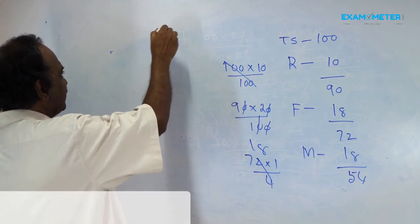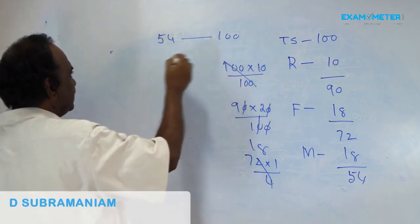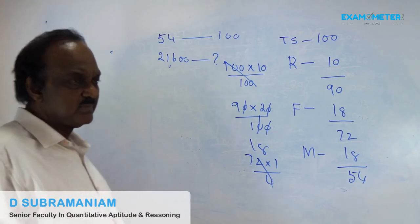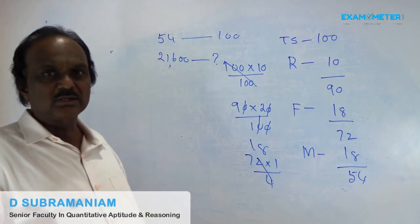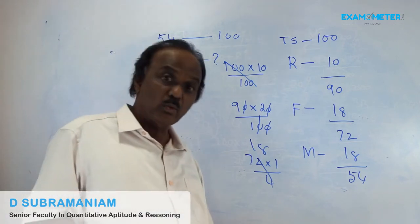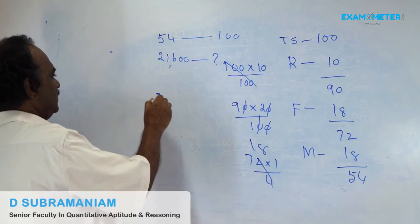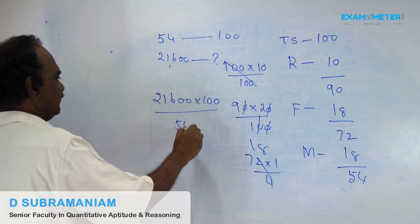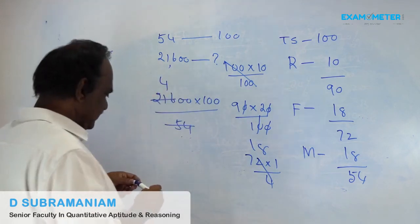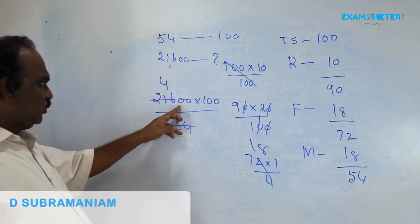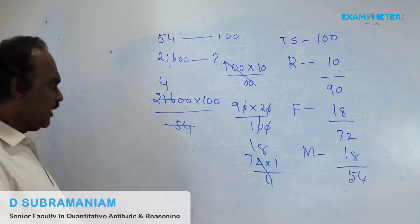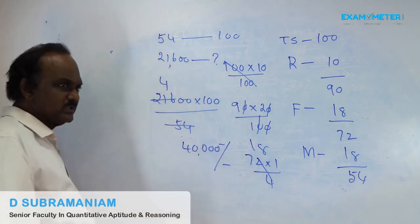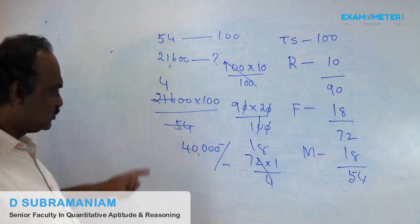If savings are 54, total salary is 100. If savings are 21,600, what is the total salary? 21,600 × 100 / 54. 54 cancels 4 times giving 4 followed by 4 zeros — 40,000. His total salary is Rs. 40,000.